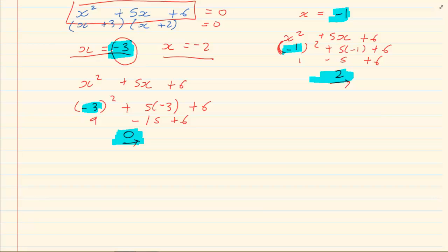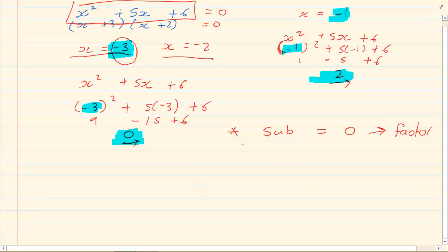Now there are two things you need to realize. Number 1, when you substitute and it is equal to 0, then that number is a factor. Second, when you substitute and it is not equal to 0, then it is not a factor. And the answer is a remainder.